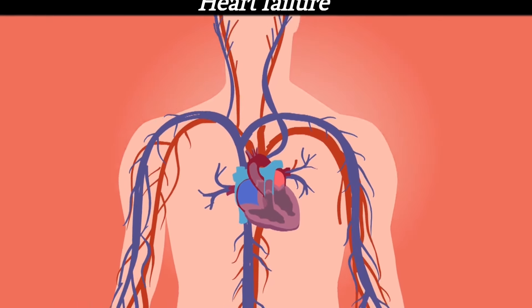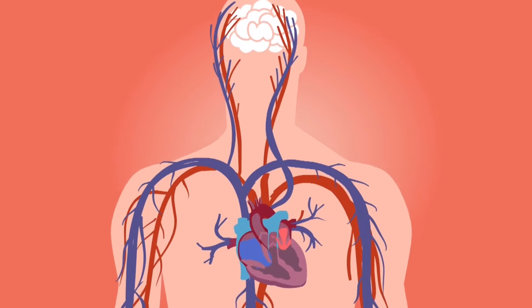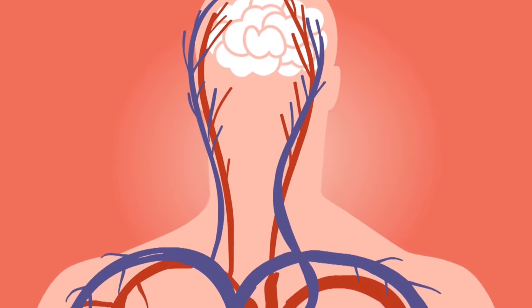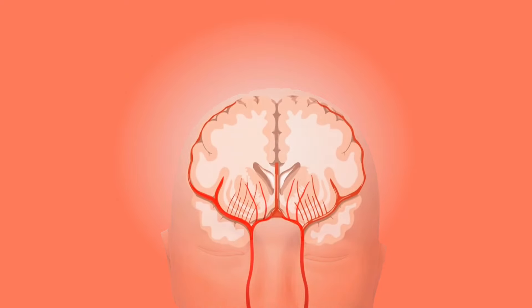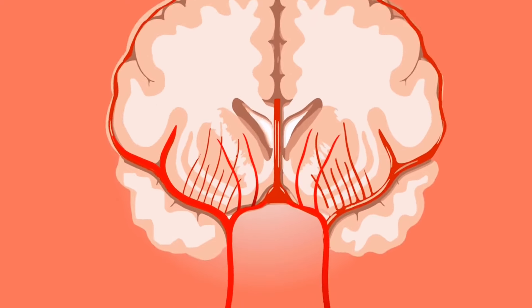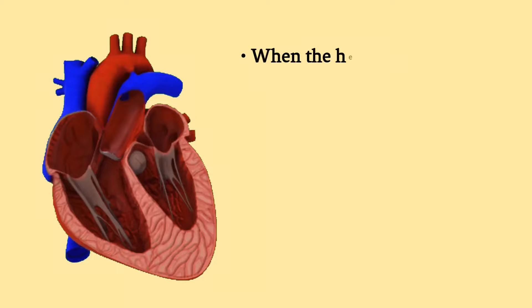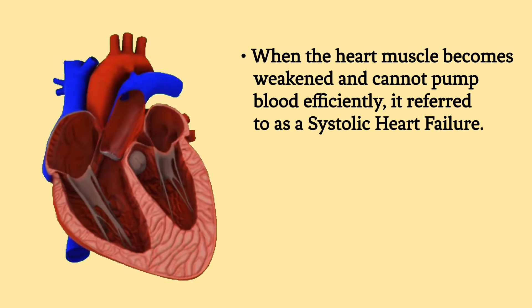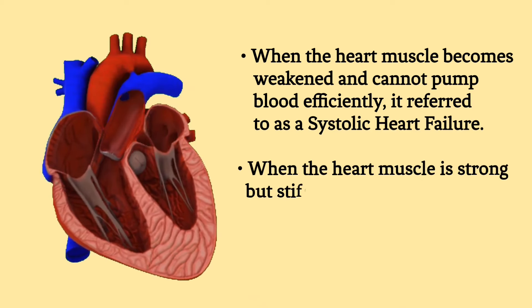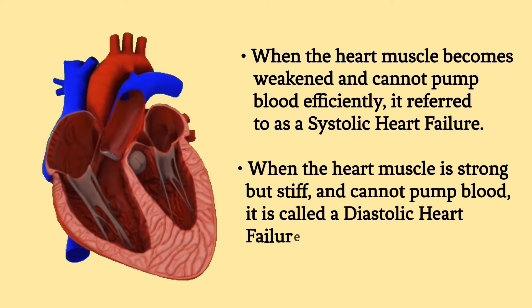Heart failure is also a prevalent heart disease. It is a condition where the heart cannot pump blood efficiently. A stroke occurs when the blood flow to the brain is interrupted, causing brain cells to die. It can lead to permanent disability or death. When the heart muscle becomes weakened and cannot pump blood efficiently, it is referred to as systolic heart failure. When the heart muscle is strong but stiff and cannot pump blood, it is called diastolic heart failure.